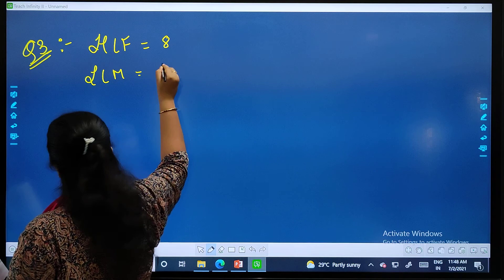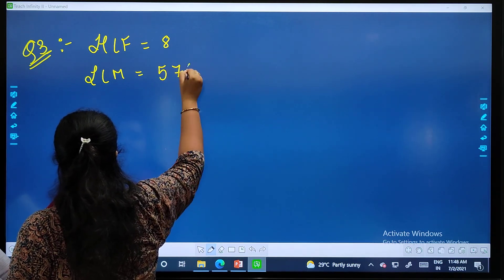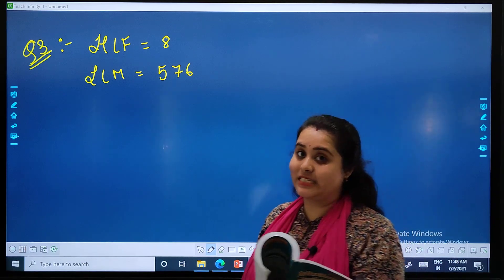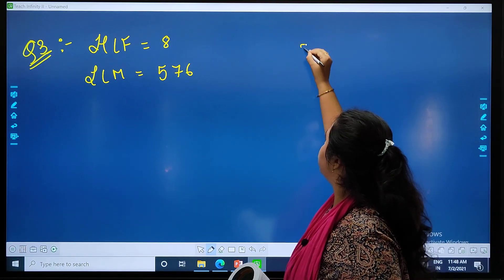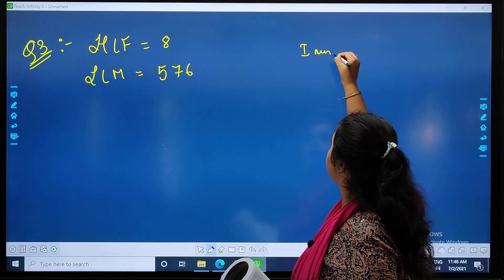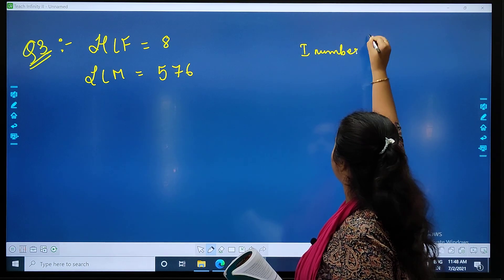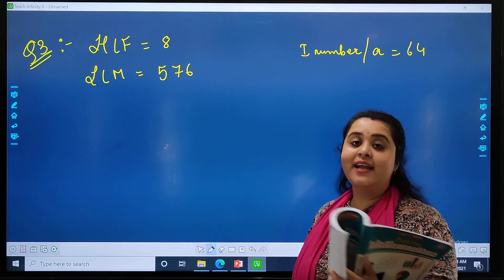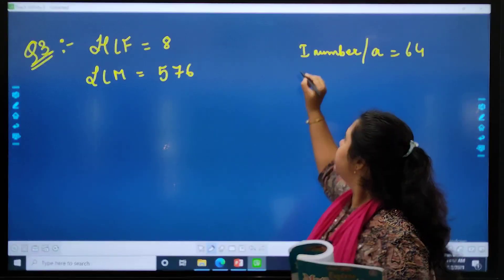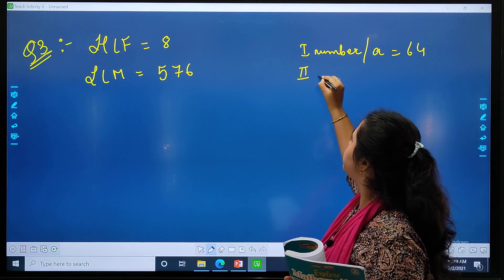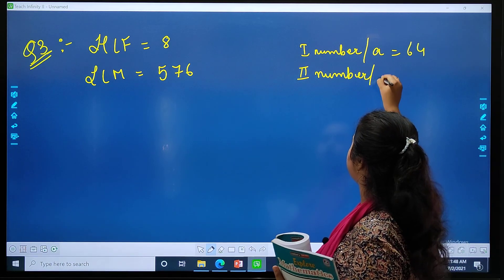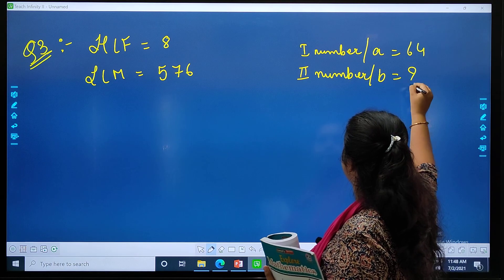LCM equals to 576. Now if one number is 64, the first number or if you want you can write A equals to 64. Find the other number. That means you are supposed to find the second number, if you wish to write it B. Done.